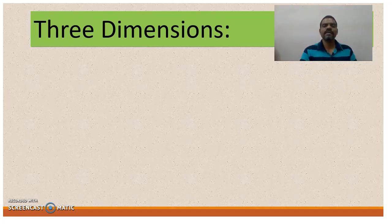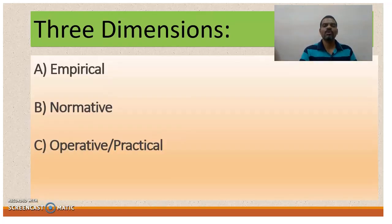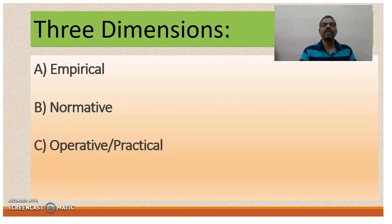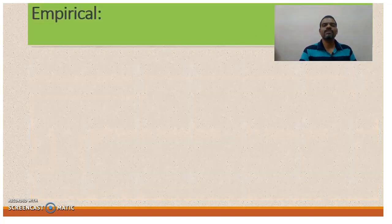By analyzing ideas we can say that there are three important dimensions of ideologies. Those are: the empirical dimension, also known as the descriptive dimension; the normative dimension, also known as the prescriptive dimension; and the third is the operative or practical dimension.